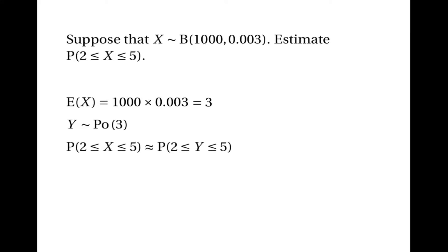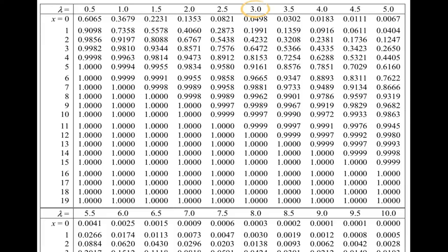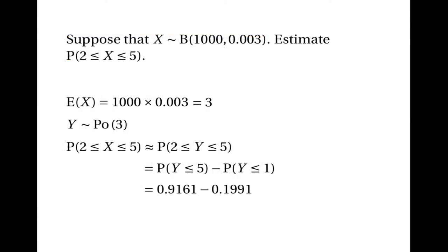The probability that x is between 2 and 5 is approximately the same as the probability that y is between 2 and 5, which is the chance that y is 2, 3, 4 or 5. That equals the probability that y is less than or equal to 5 minus the probability that y is less than or equal to 1. Looking at the Poisson tables where lambda equals 3: the row where x is 5 gives 0.9161 and the row where x is 1 gives 0.1991. So the calculation is 0.9161 minus 0.1991, giving the answer 0.7170.